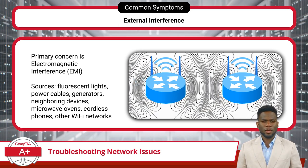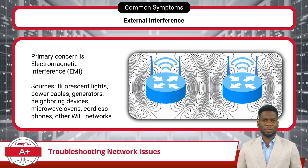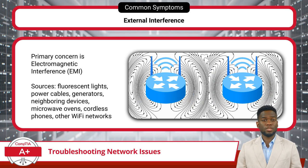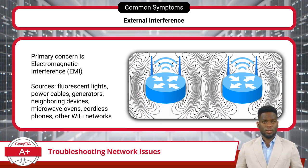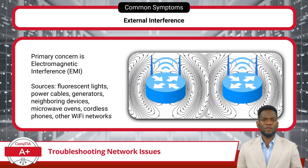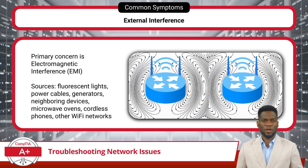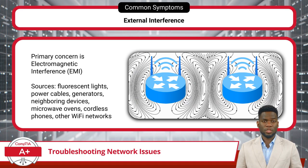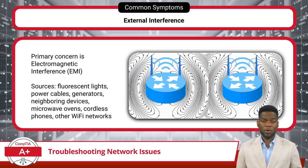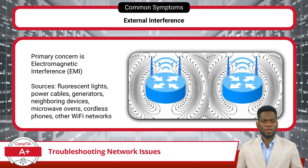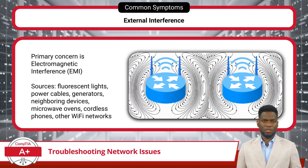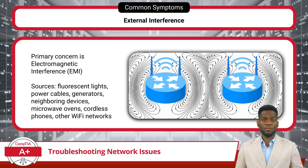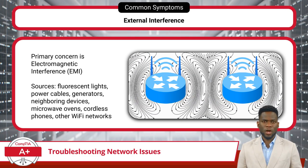In wireless network environments, EMI can present unique challenges, particularly in settings where multiple access points are deployed to facilitate wireless connectivity for users. Interference from external sources, such as microwave ovens, cordless telephones, and neighboring Wi-Fi signals, can significantly disrupt wireless communication. This interference can lead to intermittent connectivity issues, slow data transfer rates, and overall poor network performance. To address EMI-related problems in wireless networks, one approach is to carefully select Wi-Fi channels that are less susceptible to interference from neighboring networks and other electronic devices.